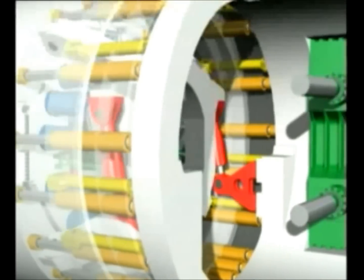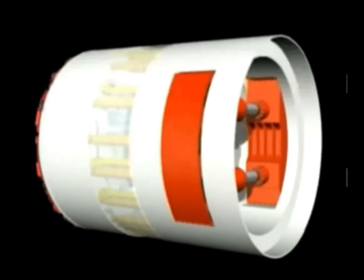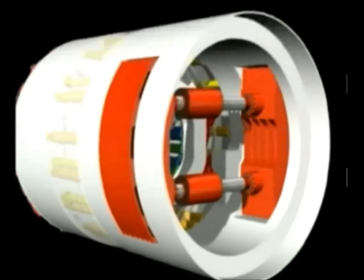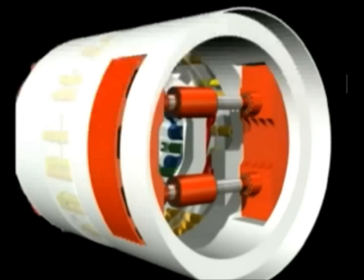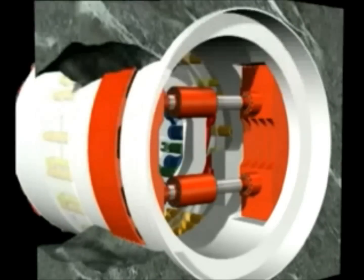The torsional moments developing from the tunneling excavation are transferred into the steel structure of the gripper shield via the torsional ring and two torque support cylinders. The torque support cylinders compensate thereby the relative motion between front and gripper shield.